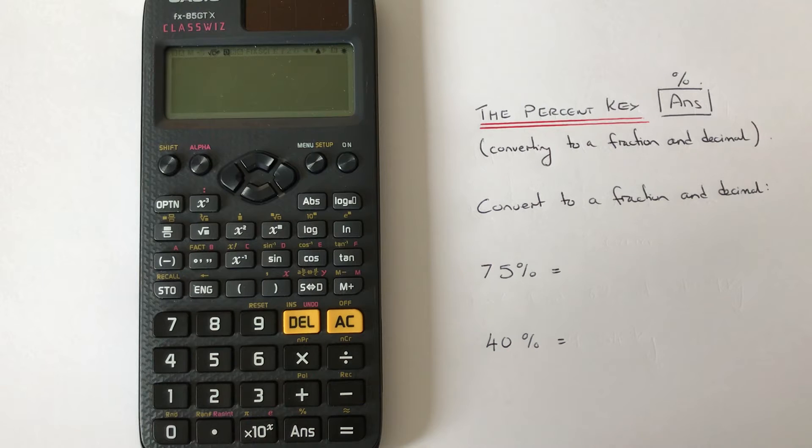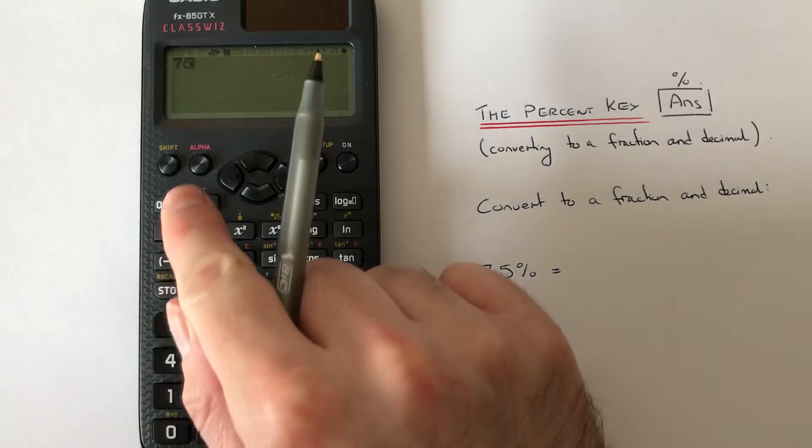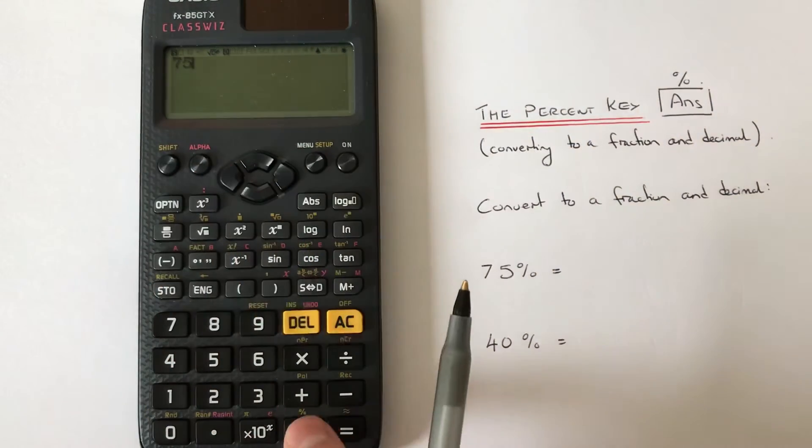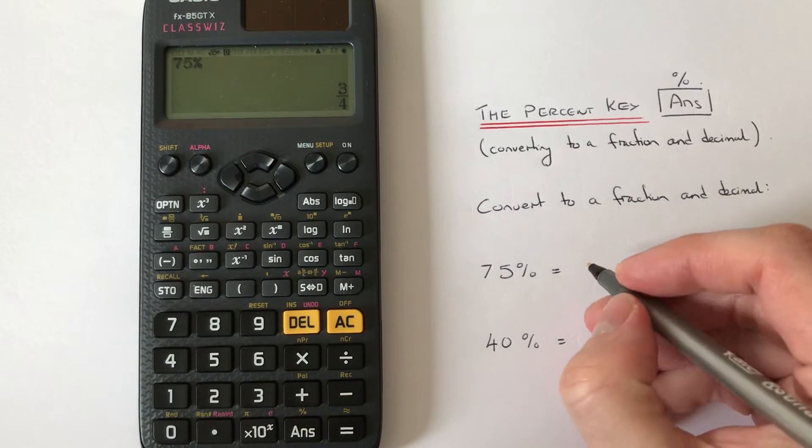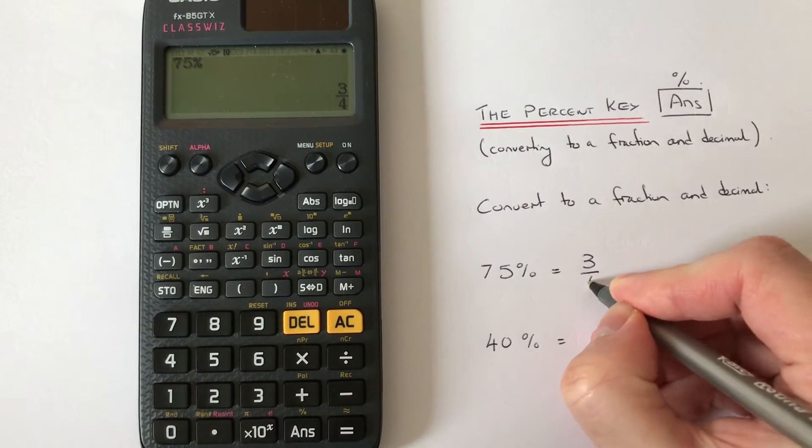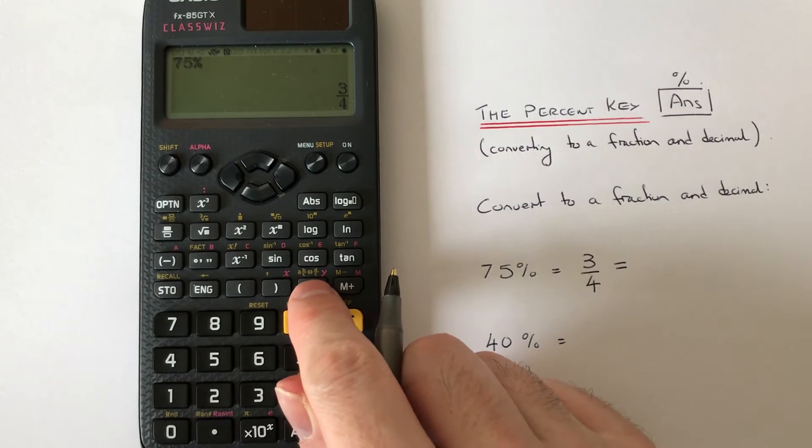So we type in 75, then Shift ANS, press equals. First of all we get a fraction, and then if you want it as a decimal we press SD and we get 0.75.